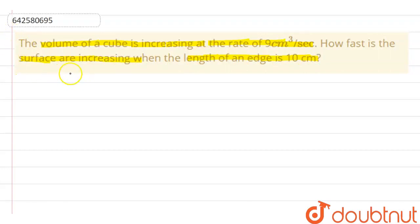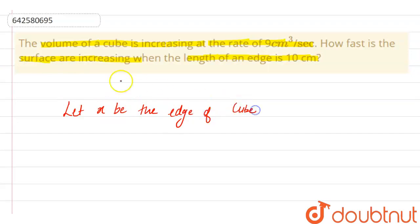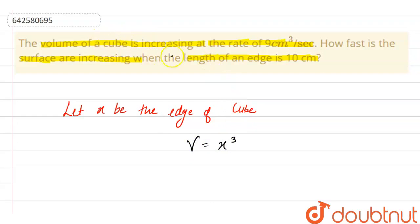So now for this question, let x be the edge of the cube. It is also given that the volume of the cube is increasing at the rate of 9 cm³ per second. We know that the volume of a cube whose edge is x is V = x³. Since the volume is increasing at 9 cm³ per second, we can write dV/dt = 9 cm³ per second.